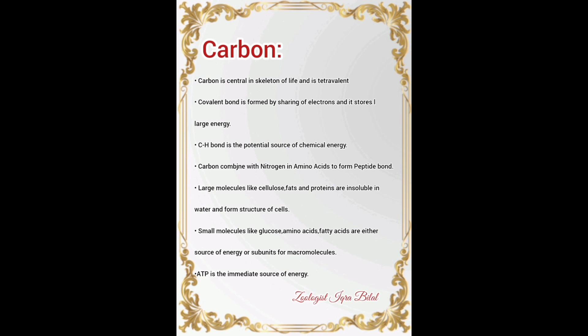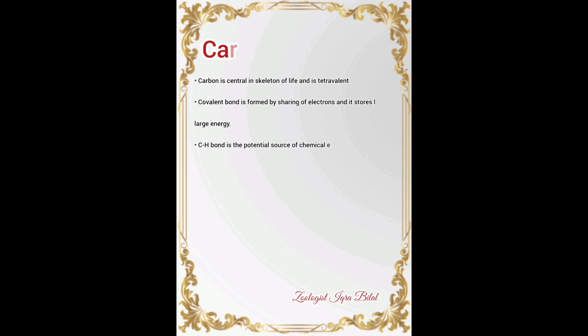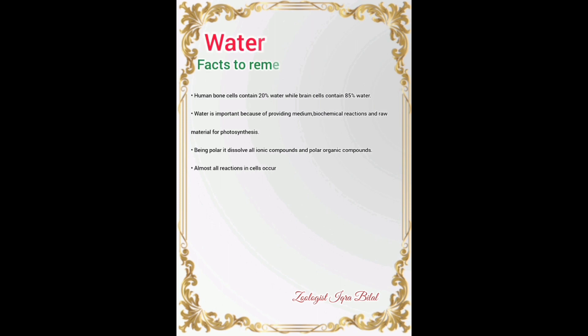Large molecules like cellulose, fats, and proteins are insoluble in water and form the structure of cells. Small molecules like glucose, amino acids, and fatty acids are either sources of energy or subunits for macromolecules. ATP is the immediate source of energy in metabolism — both outside and inside the cell. This has appeared in past papers.